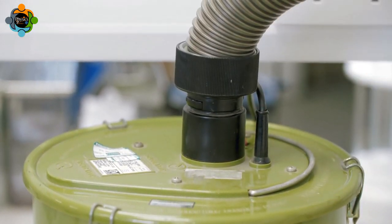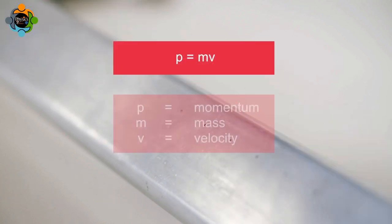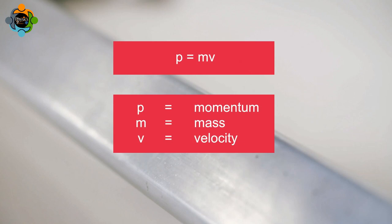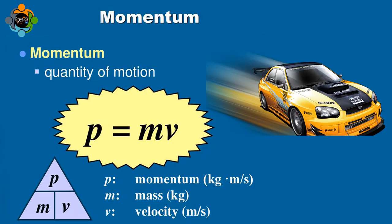The momentum of a glider on an air track can be calculated using the equation p equals mv, where p is momentum, m is the mass, and v is the velocity.